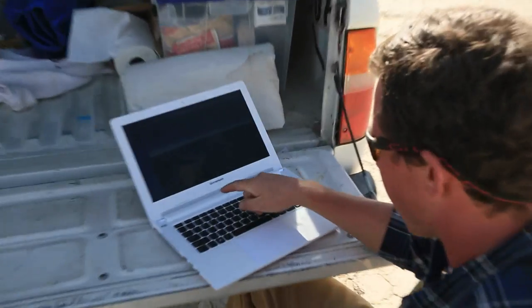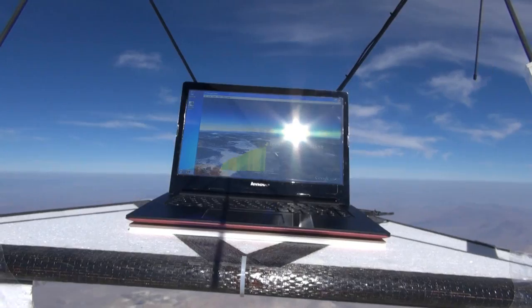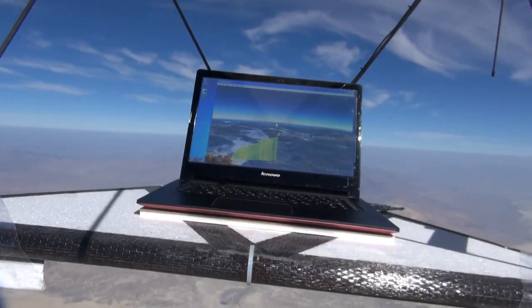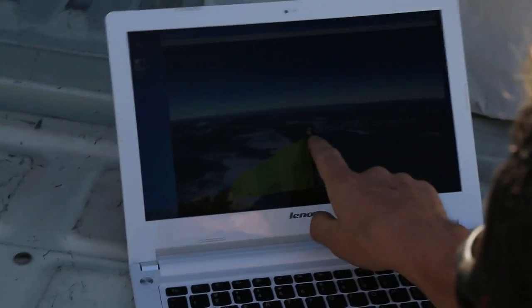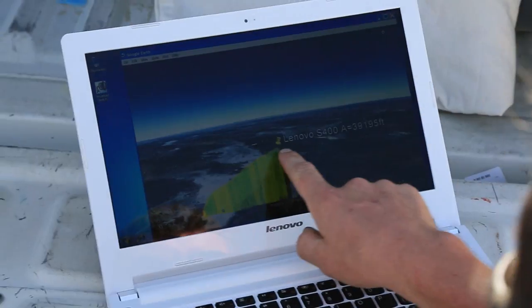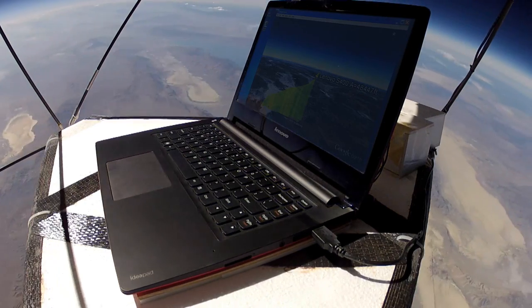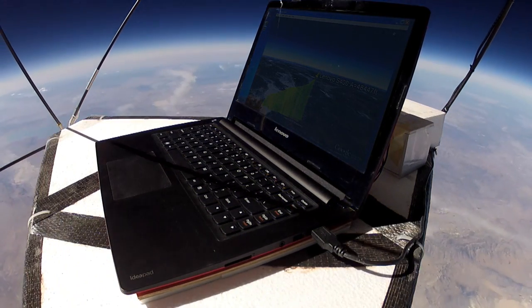We're watching the position of our balloon as it's going up. How high are we? We're at 30,000 feet right now. It's going up pretty fast. This will show us right where it's going, the path it's going to take and hopefully right where it's going to land when it pops. Sweet.